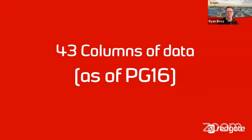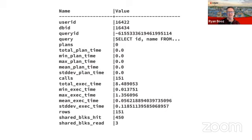As of Postgres 16, there are currently 43 columns of data returned with pg_stat_statements. In Postgres 14 there were maybe 34 columns, so we've added a number over the last couple of versions. Some of that's because folks have said, hey, we need to know the last time this query was run — and I believe that's one of the new columns. So you can identify, hey, this query looks like it's used a lot, but the last time it ran was last night at 1 a.m. — it's a nightly query that does a lot of work but only in the middle of the night, and that's okay.